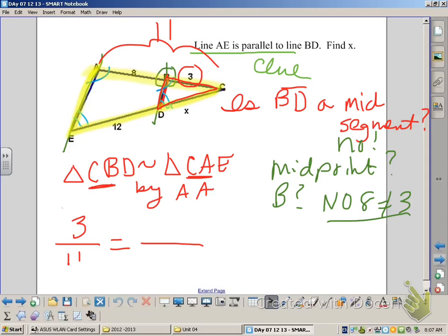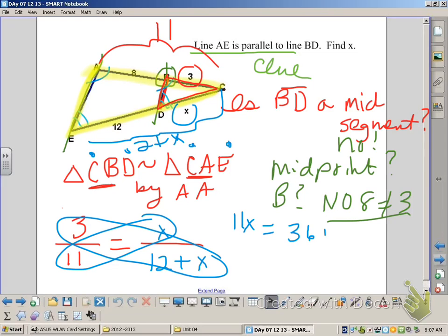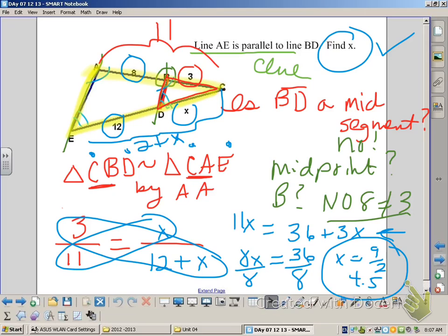Also, when this happens, there are other things we can do to solve the problem, which we're going to talk about today. So we get X equals 4 and a half.